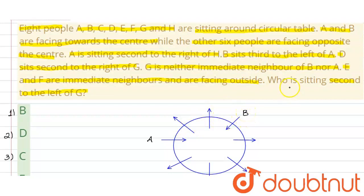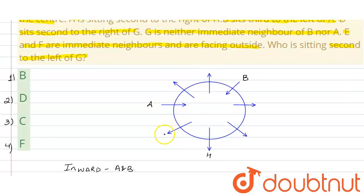D sits second to the right of G. Abhi humein G ki position clear nahi hai, to hum D ki position bata nahi sakte. Next clue is: G is neither an immediate neighbour of B nor A. Means G, A aur B ke bilkul paas mein nahi baitha. So, G ki jo position bachi, wo hai this one. This is the position of G.